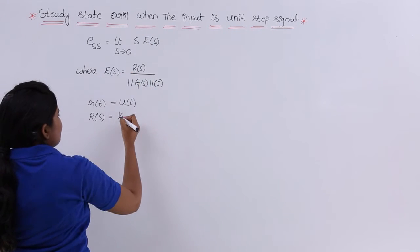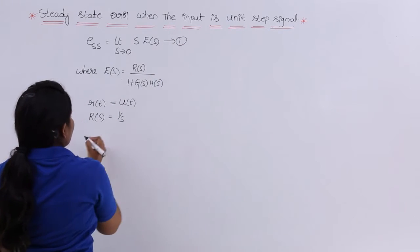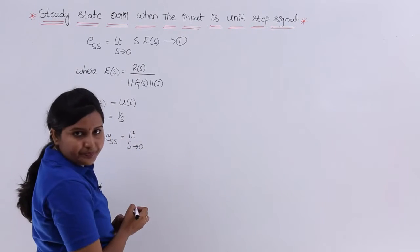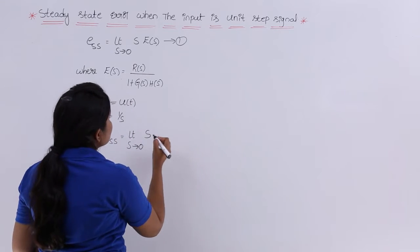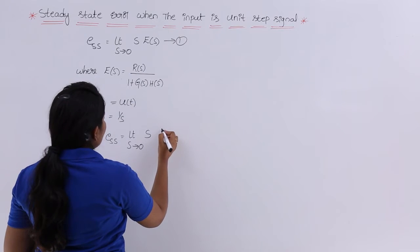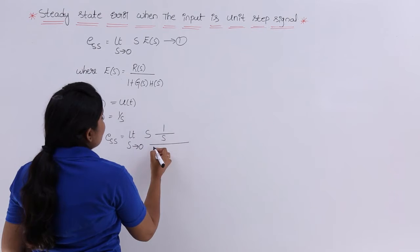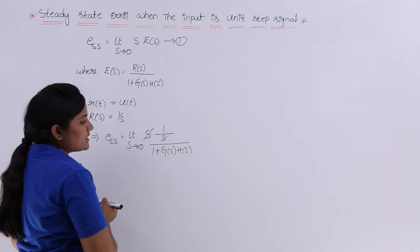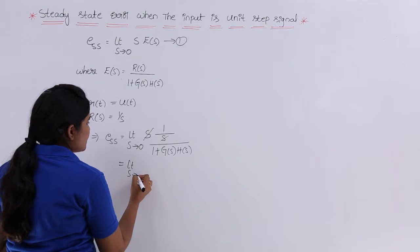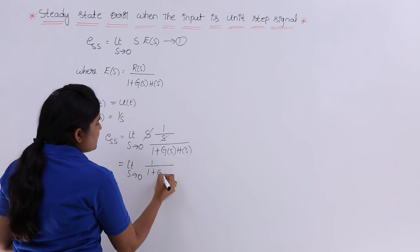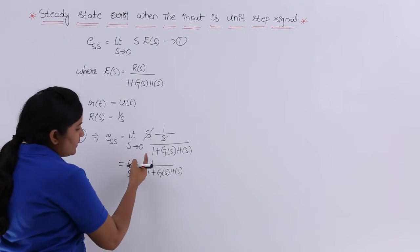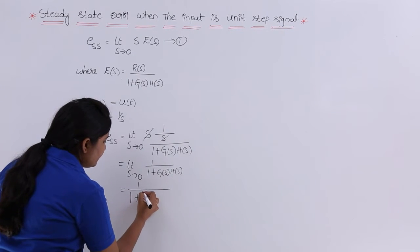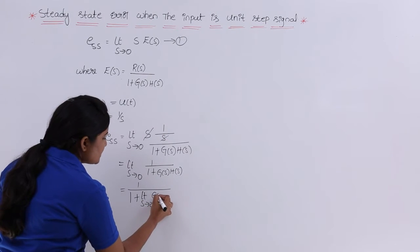Substituting R(s) = 1/s into equation 1, the steady state error becomes ESS = limit s→0 of s · [1/s] / [1 + G(s)·H(s)]. We can cancel s with s, giving ESS = limit s→0 of 1 / [1 + G(s)·H(s)]. Since 1 is a constant, the limit applies only to G(s)·H(s), so we write: ESS = 1 / [1 + limit s→0 of G(s)·H(s)].